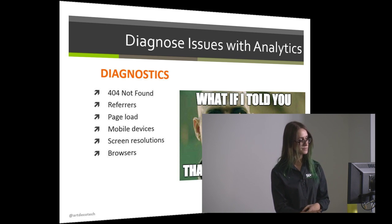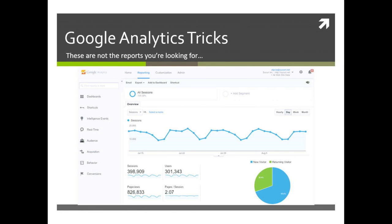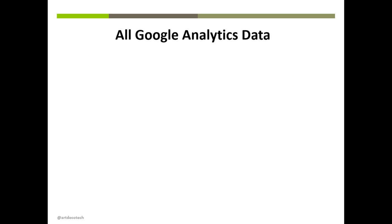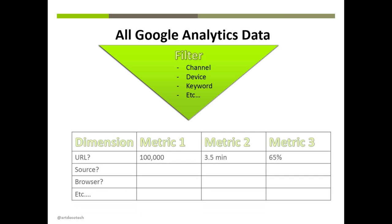Most people in Google Analytics live almost entirely in the Reports tab, but that's not really where we're going — we're about to dive into custom reports. Custom reports let you take all the data about your website and apply filters, such as showing only traffic from organic search or only people on mobile devices. You choose dimensions and metrics: the dimension is the first column — it might be your landing page — and then you can add a secondary dimension to drill deeper.